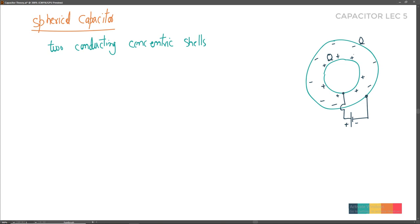In such a charge system - as we studied in electrostatics - the electric field direction goes from the inside shell outward, perpendicular to the surface. As per the definition of capacitance for a two-conductor system, we write capacitance as the magnitude of charge Q divided by the potential difference.